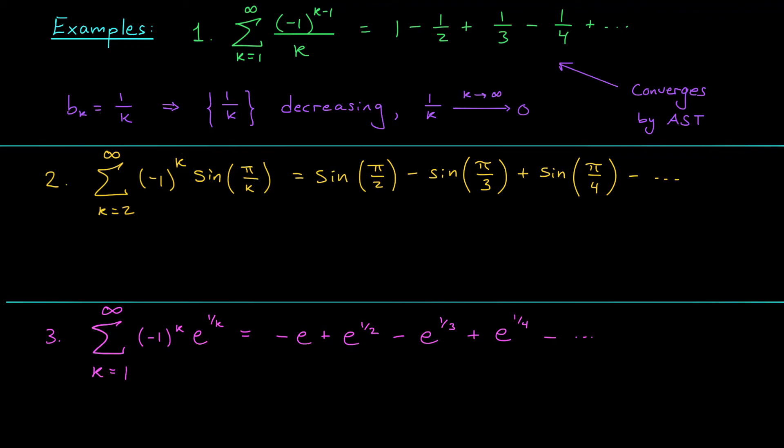On to example two. Here we're adding up the terms minus one to the k times sine of pi over k. That's sine of pi over 2 minus sine of pi over 3 plus sine of pi over 4 and so on. Now notice that all of these angles, pi over 2, pi over 3, pi over 4, etc., those all lie within quadrant one. So if we ignore the plus, minus, plus, minus, these terms sine of pi over k, these really are positive terms.